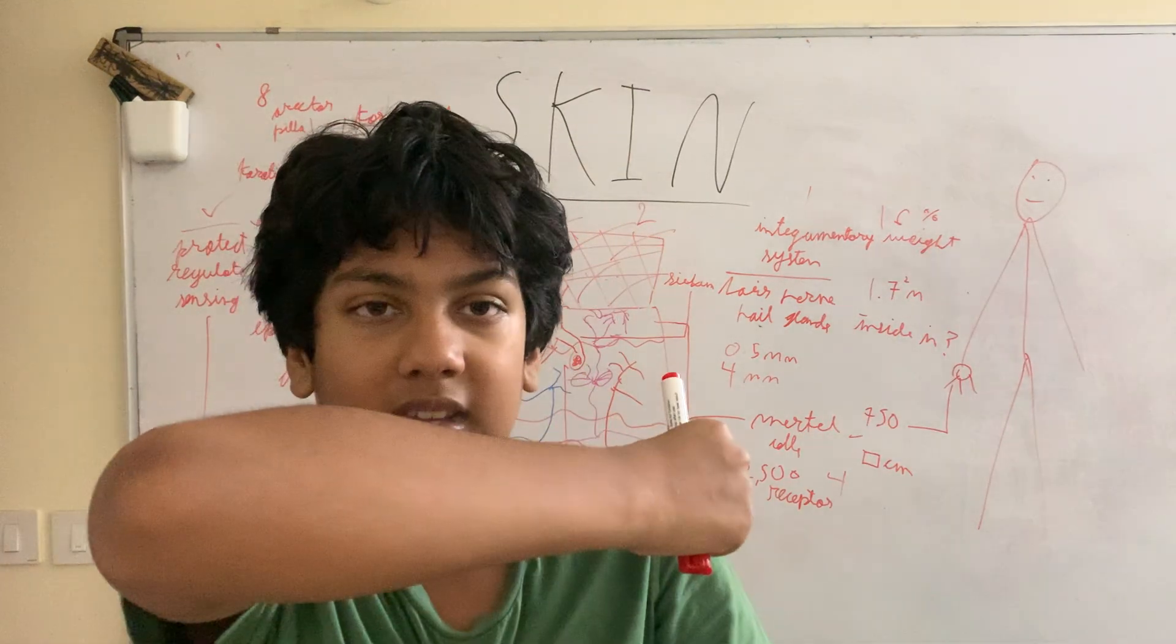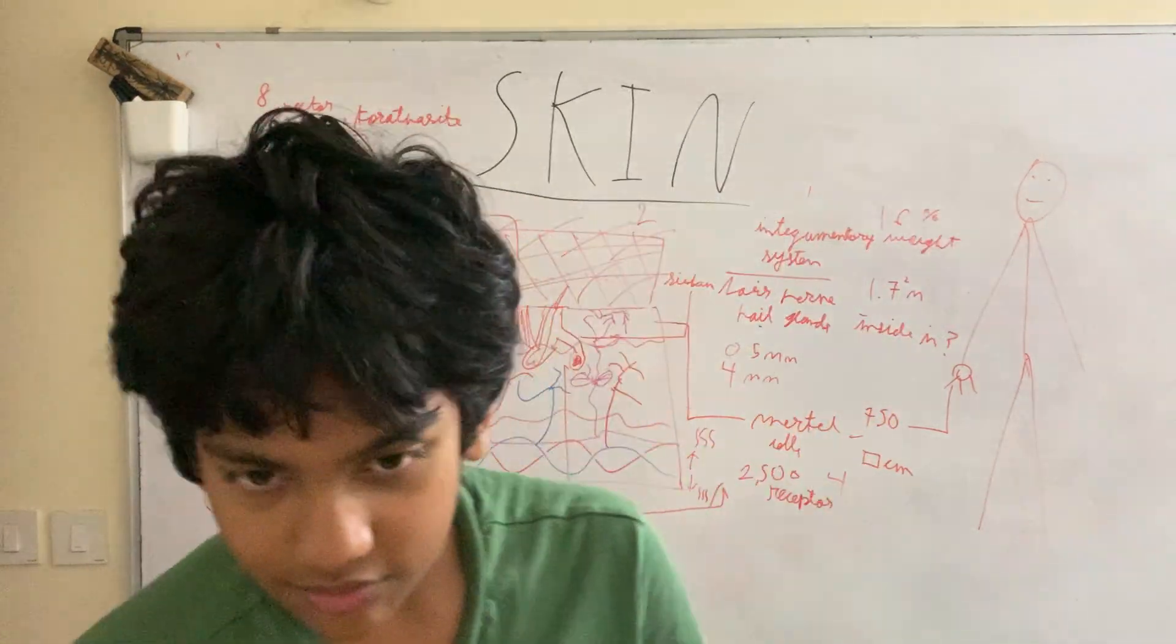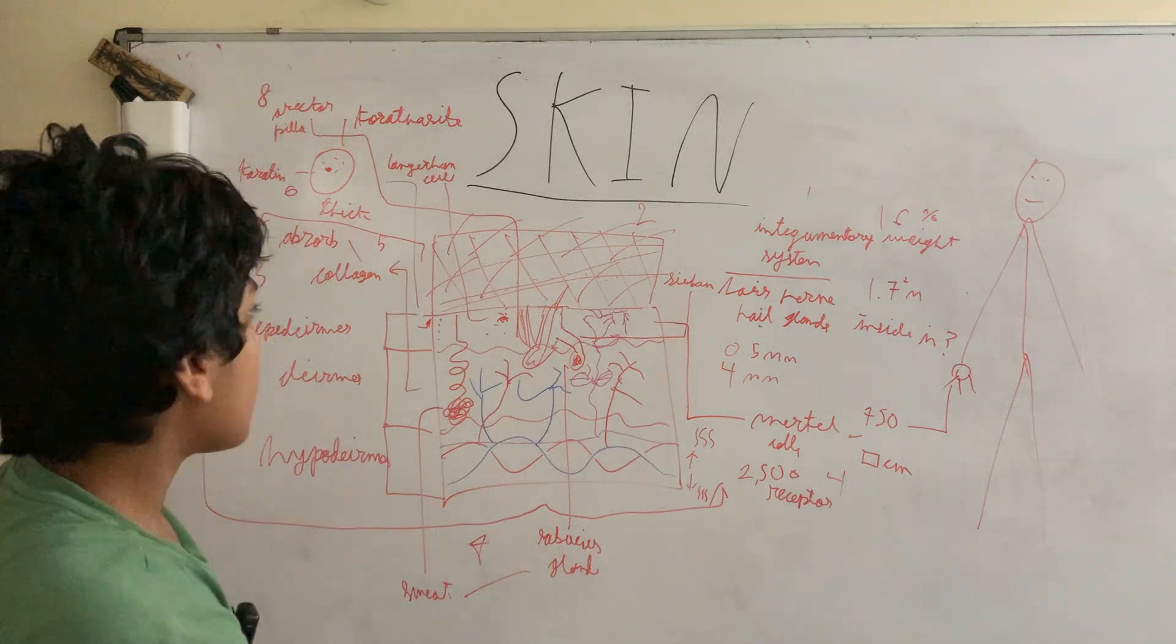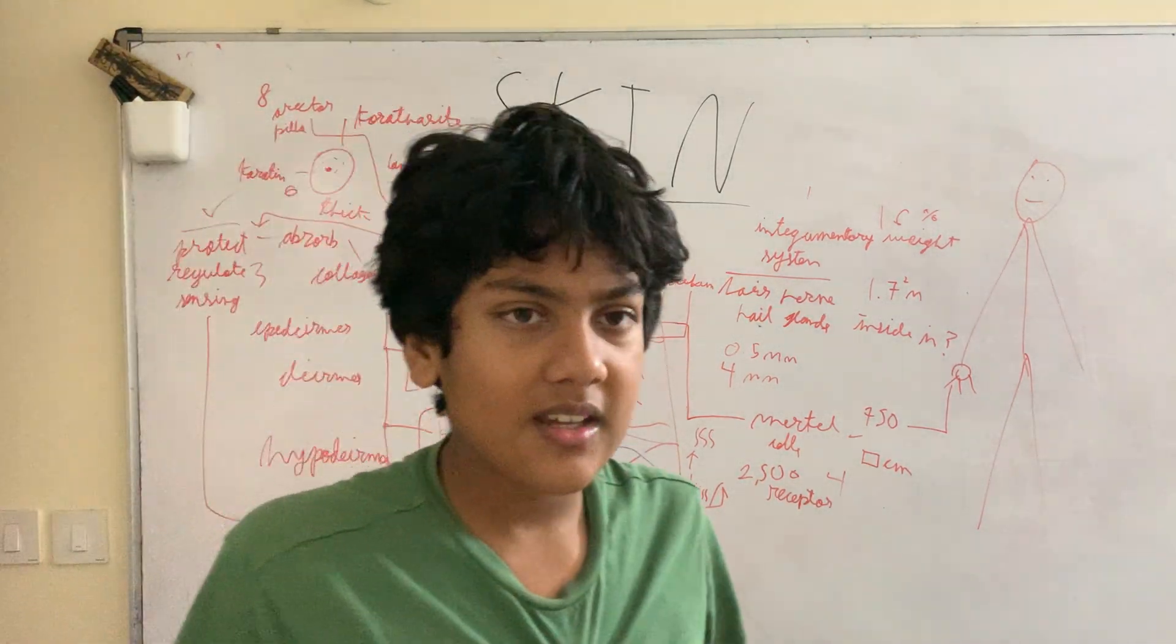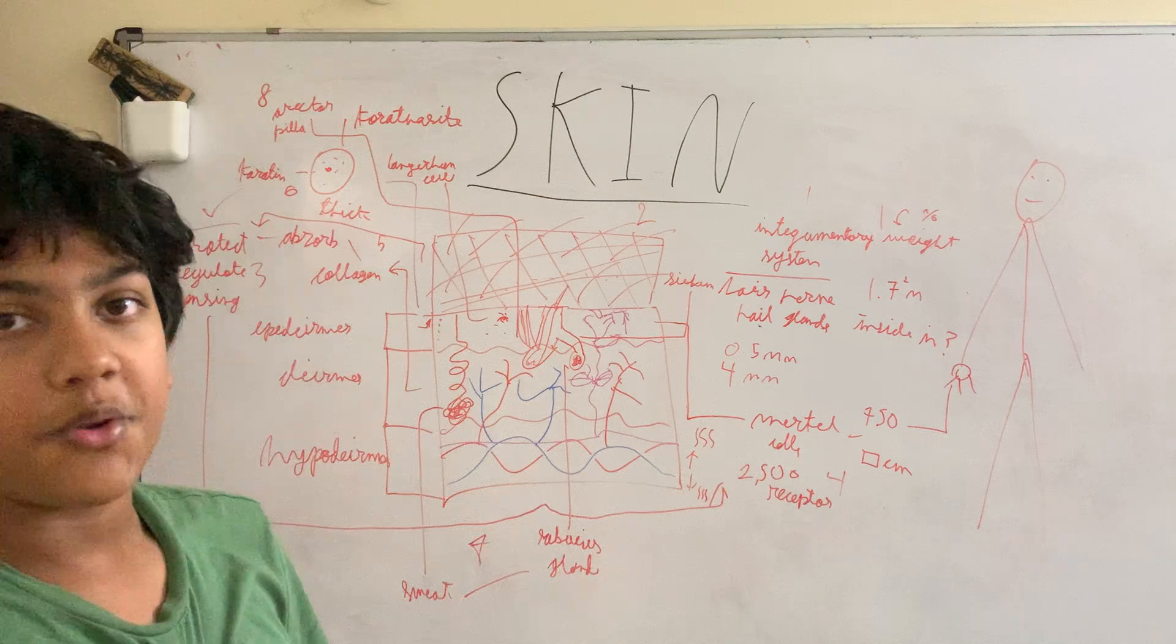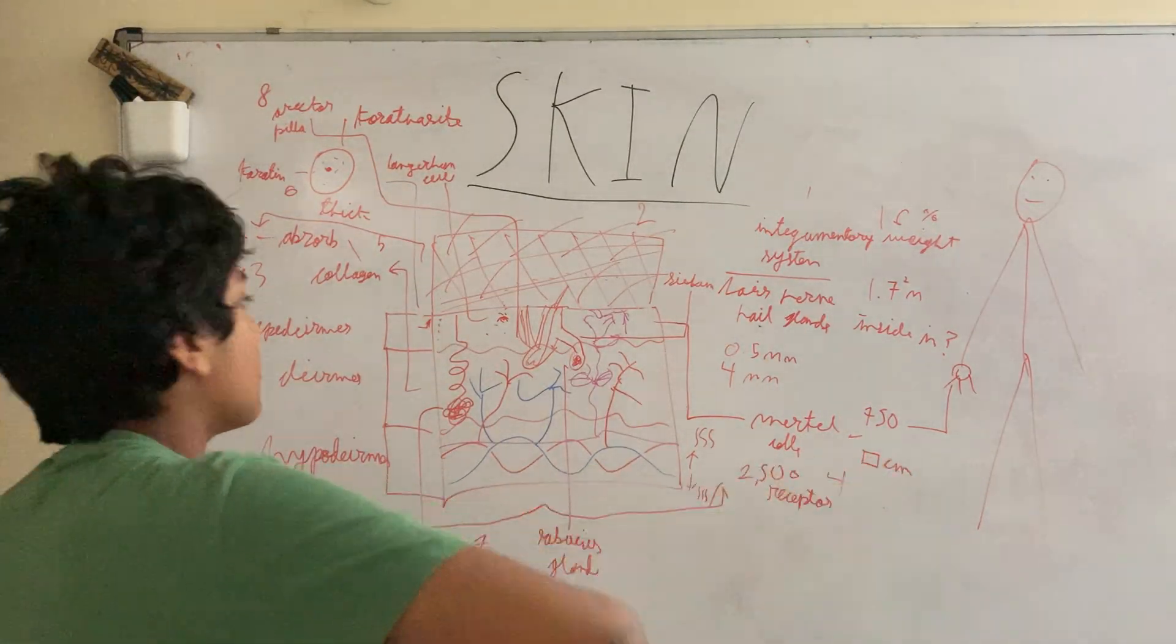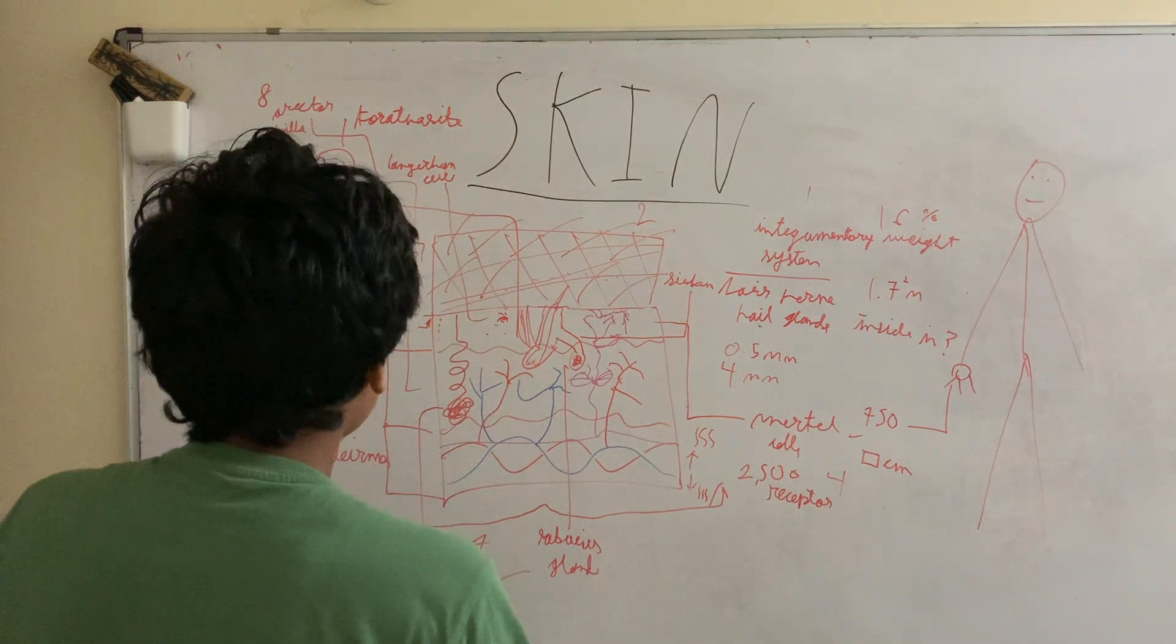But say some harmful cells or bacteria just enter in somehow. Well then we have the Langerhans cells. These cells are basically like sirens. When they detect an enemy, or in this case a microorganism that's harmful, it'll basically send a signal to the nearest white blood cell to attack it. Then an immune response hits and it's all cleaned up.